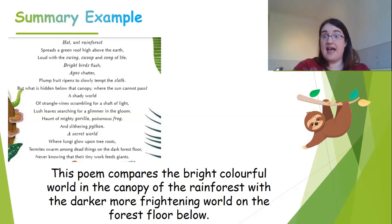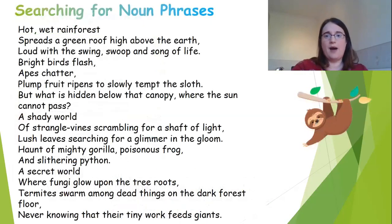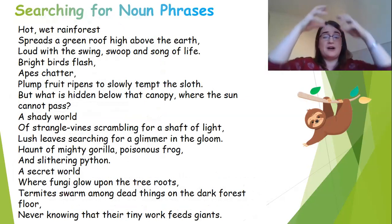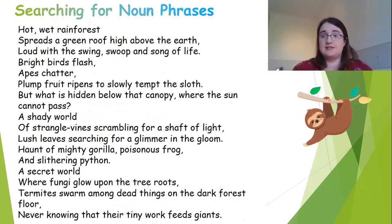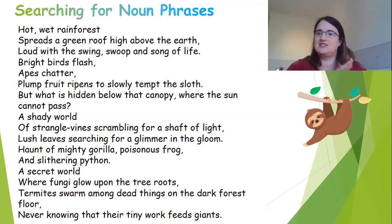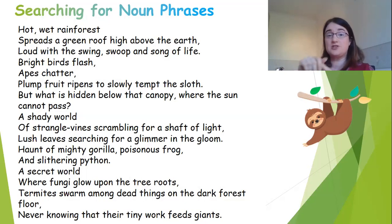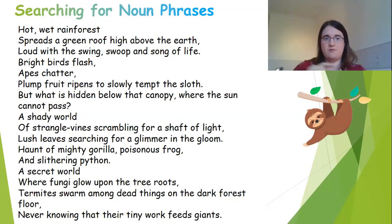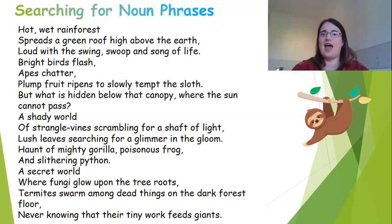Now we're going to go back and think about some noun phrases. Cast your mind back to all that work we've been doing on noun phrases and see how many you can find in the poem. Make a big long list in your book. Remember they're phrases — not sentences — so they're not going to have a verb in them. The noun phrases we looked at either had a determiner and a noun, a determiner, adjective and noun, maybe two adjectives and a noun, and sometimes an extra prepositional phrase on the end. Press pause and off you go.